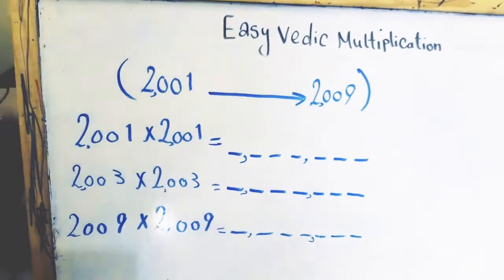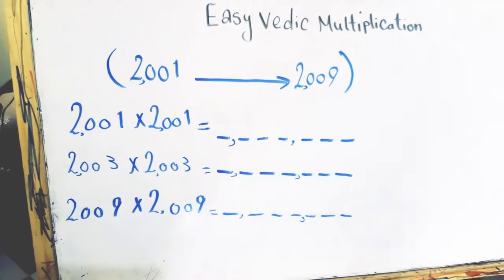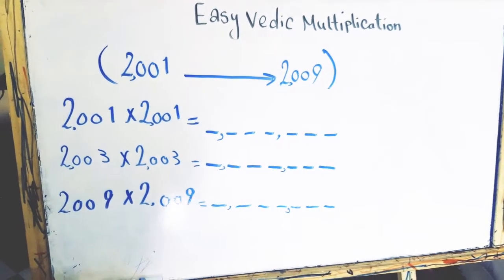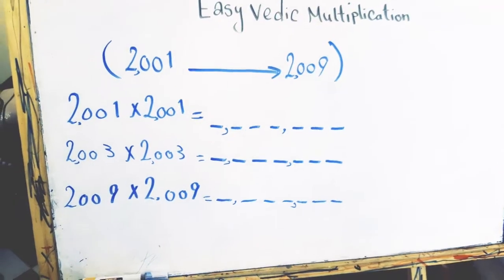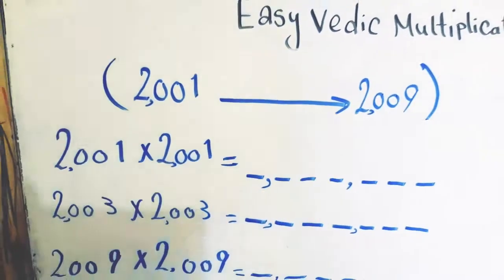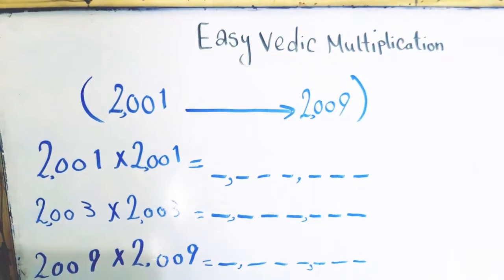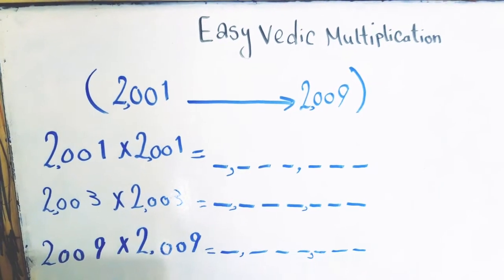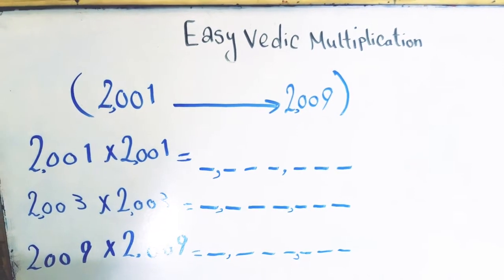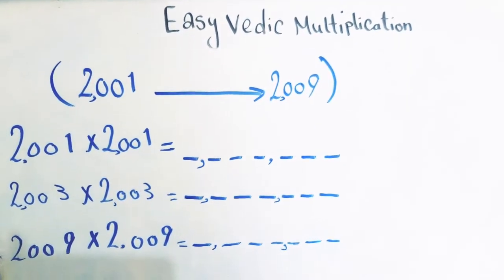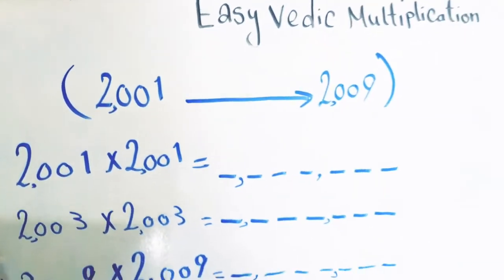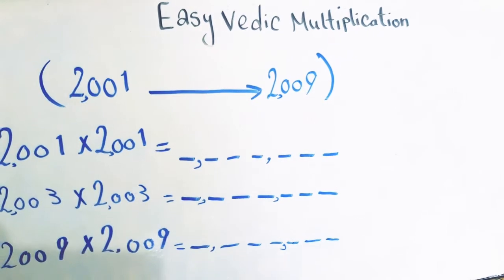If you are watching my channel for the first time, please don't forget to subscribe, like this video, and share it among your friends. Let's see this important method in which we use the Vedic strategy for multiplying the numbers from 2001 up to 2009.